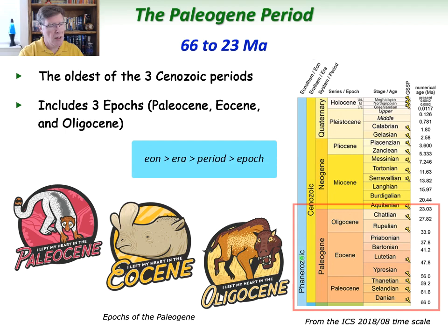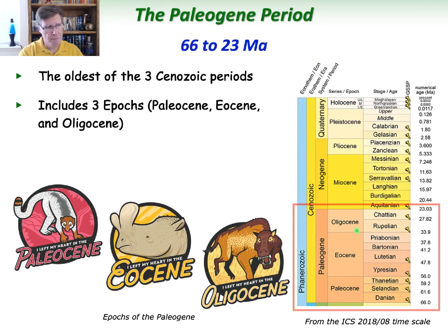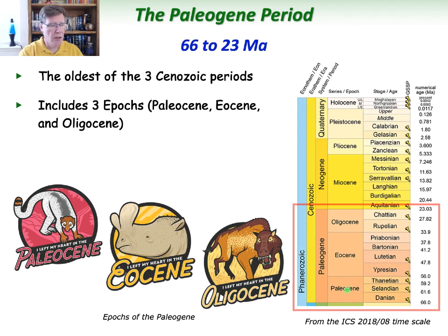The hierarchy goes: Eon, Era, Period, Epoch. The Paleogene has three epochs: the Paleocene, the Eocene, and the Oligocene. You know it's an epoch if it ends in '-cene.' Paleocene means the older part of the Eocene — that's how they came up with the word. '-cene' meaning new, and 'Eo' meaning dawn, so Eocene means 'new dawn.' We'll talk about the Oligocene in a little bit.